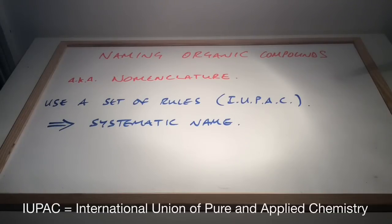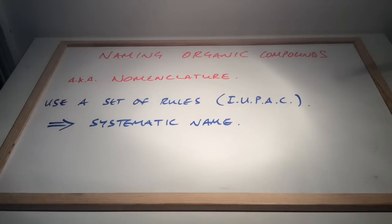So naming organic compounds, also known as nomenclature—you might see that word, that's all it means. Basically, the rules that we have to use have been laid down by a body called IUPAC, I-U-P-A-C. The name that we get when we apply those rules, that's what we call the systematic name.